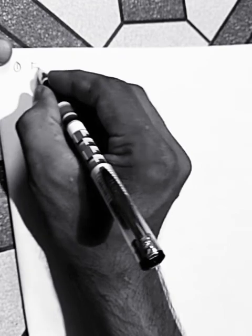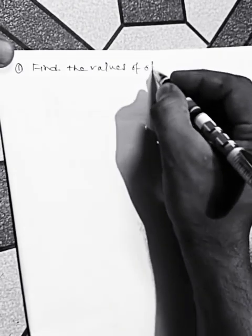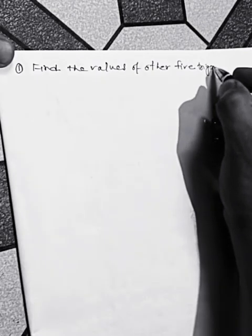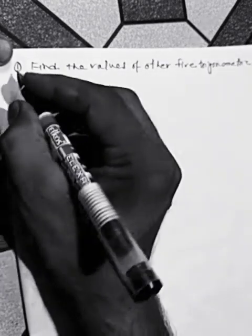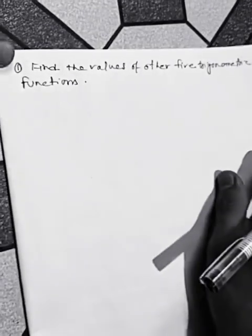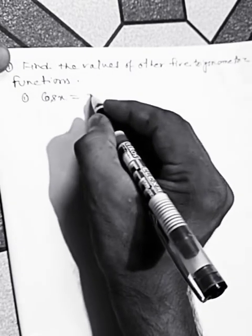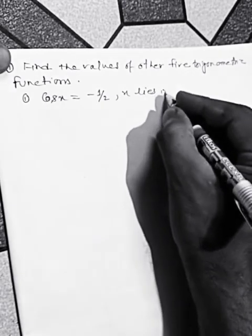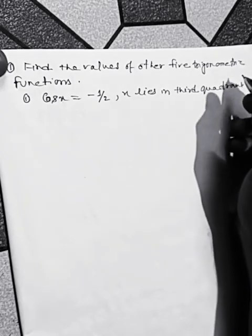Question number one: find the values of the other five trigonometric functions. Suppose cos x equals negative one-half, and x lies in the third quadrant.